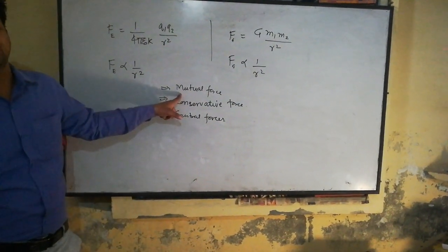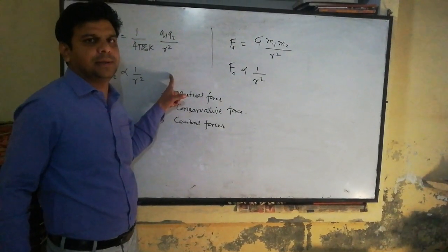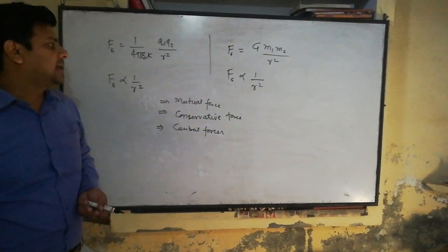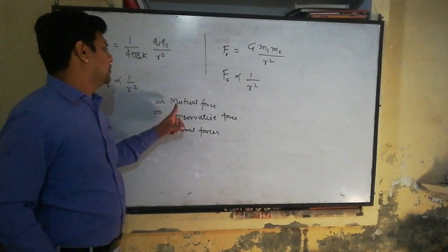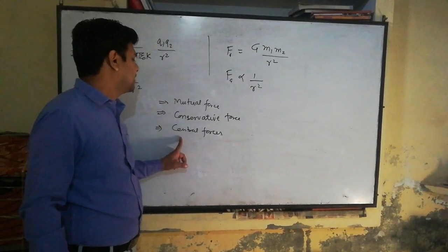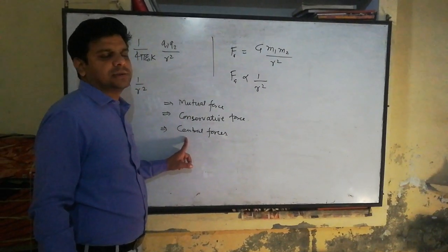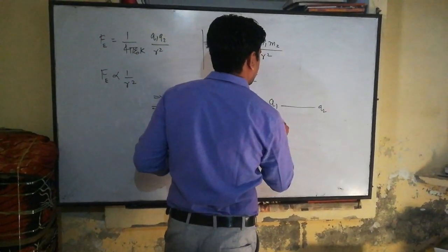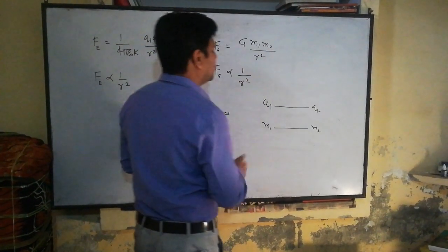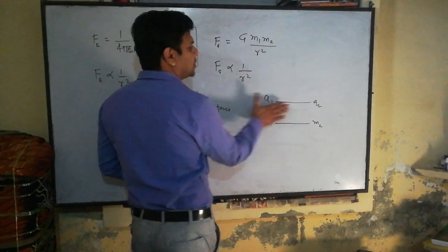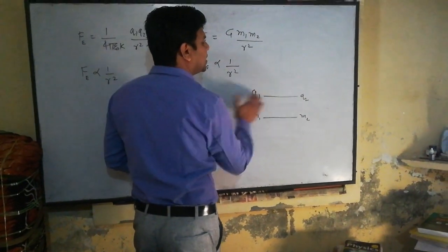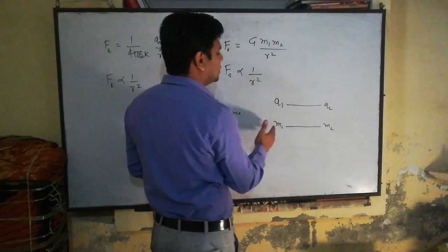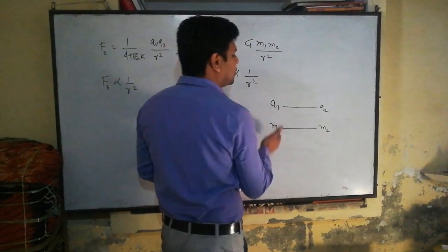Mutual force means both obey Newton's third law of motion — action and reaction. One object applies a force on another object, and then the other object applies the same but opposite force on the first object. Central force means both forces act along the line joining the two point charges or the two mass objects. The electrostatic force between two charges acts along the line joining both charges, and gravitational force acts along the line joining the two mass objects.